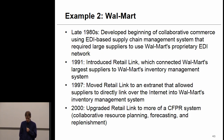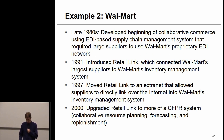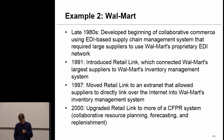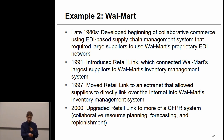Walmart has also made lots of investments in this field. They developed collaborative commerce already in the late 1980s. In the 1990s they introduced Retail Link — a kind of private industrial network connecting Walmart's largest suppliers to Walmart's inventory management system — a kind of VMI. They then upgraded to a collaborative resource planning, forecasting, and replenishment system. So these developments like PINs and vendor-managed inventory are used a lot by big firms.